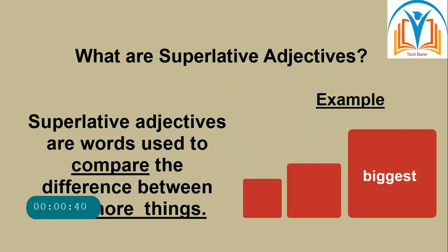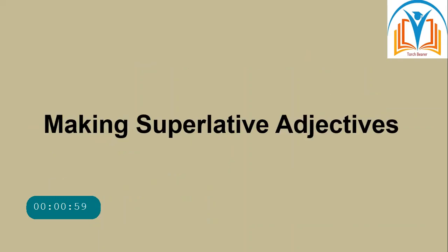Look at the example: the first one is small, the second is big, the second is bigger, and the third is biggest. Superlative adjectives are words used to compare the difference between three or more things.